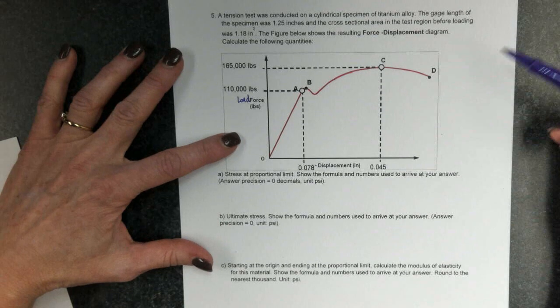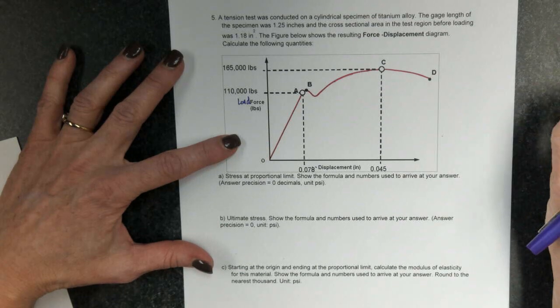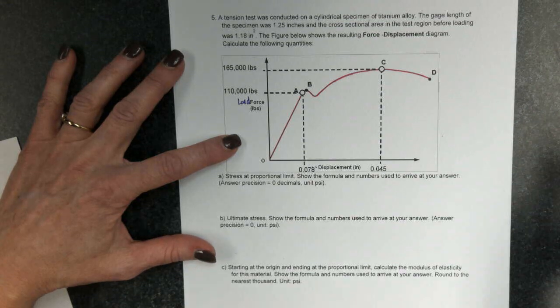In order to do that, we're going to need to know the original length of the material, and we're also going to need to know the cross-sectional area.